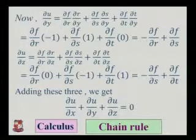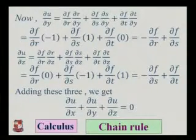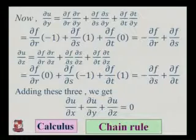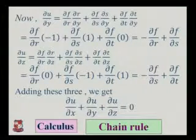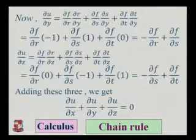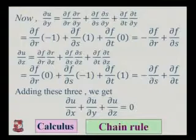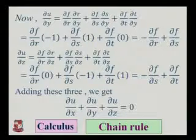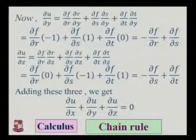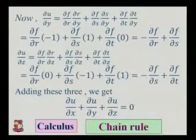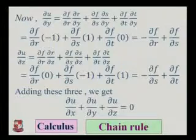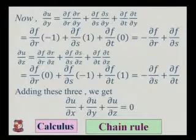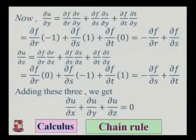Similarly, del u by del z equals del f by del r into 0 plus del f by del s into minus 1 plus del f by del t into 1, giving minus del f by del s plus del f by del t. Adding all three results, we can see they are in plus-minus form and all terms cancel, so the answer is 0 — which is what we wanted to prove. This completes the chain rule example.